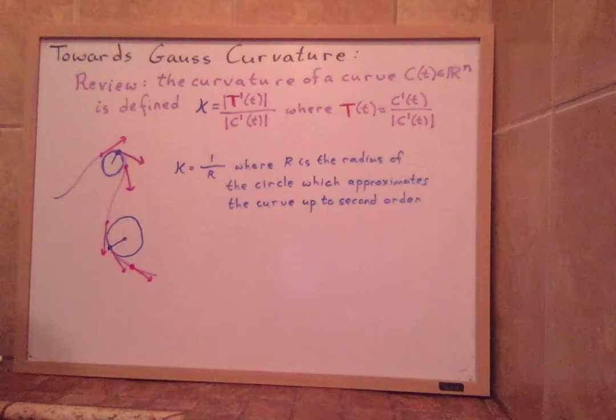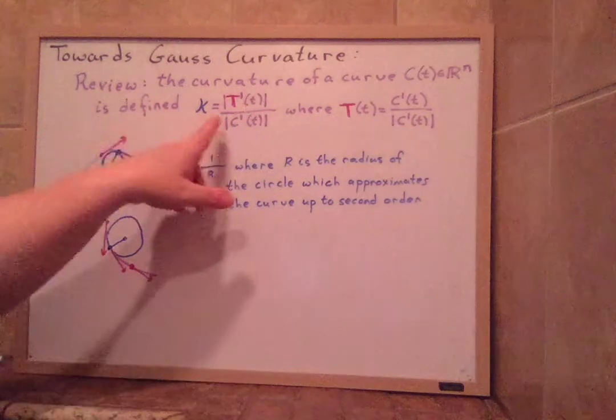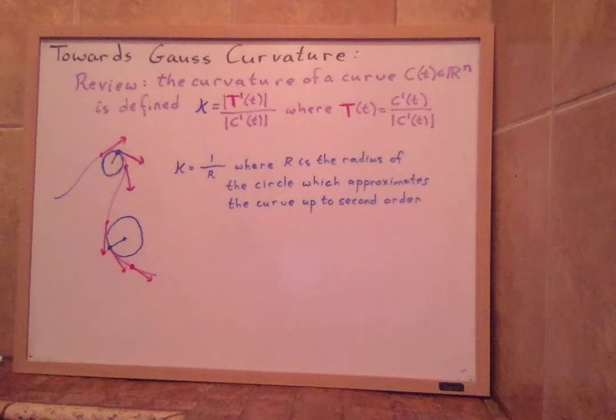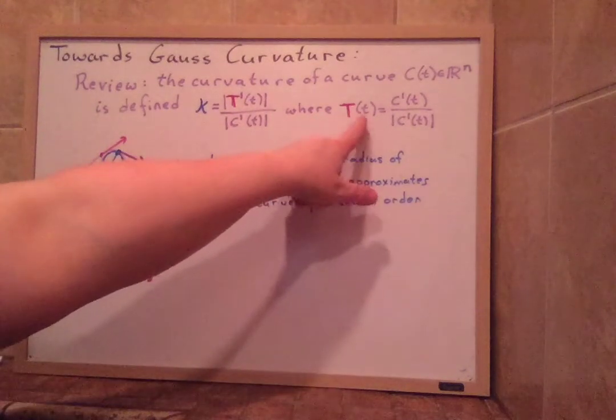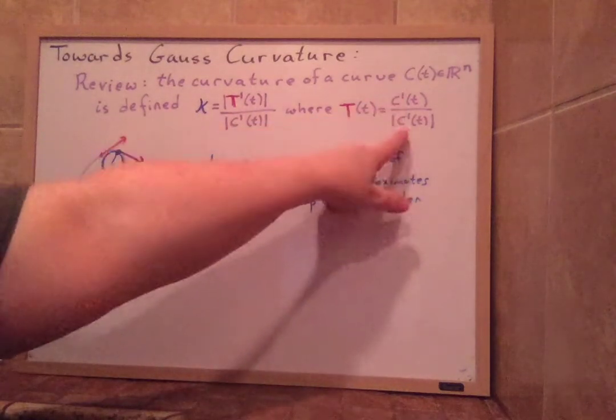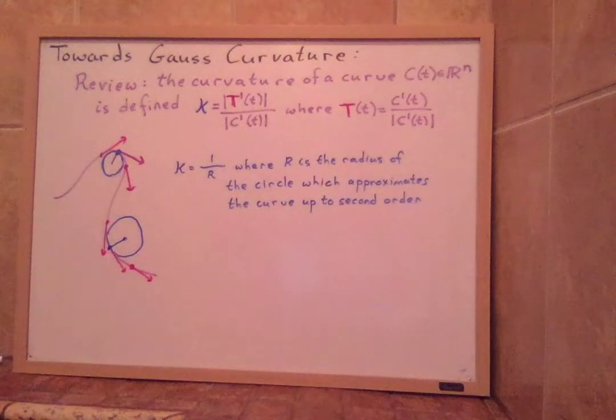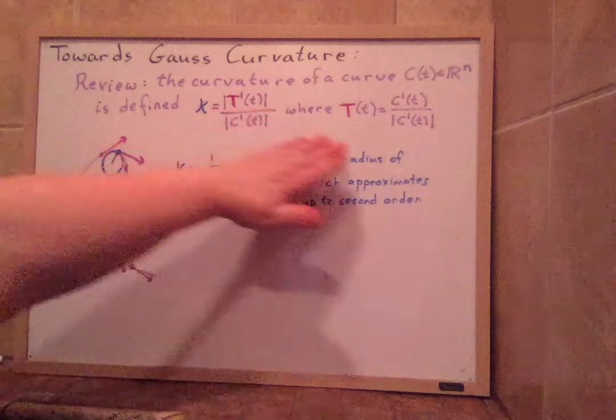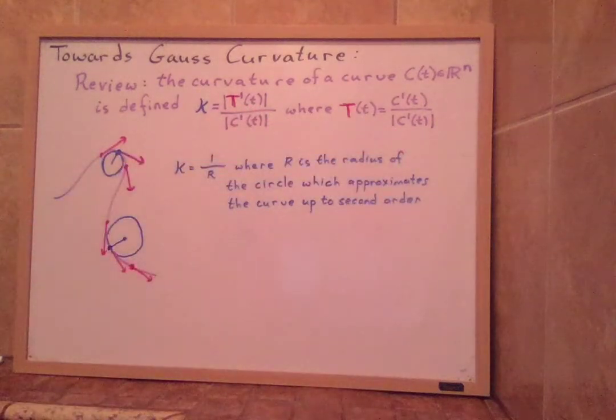So when the curve is actually parametrized by arc length, it is just the change in the tangent vector. The tangent vector is the velocity divided by the speed. So in the special case where C is parametrized by arc length, we don't have to divide by the C primes because the length of C prime is one. But this is the general definition: k equals |T'(t)| divided by |C'(t)|.